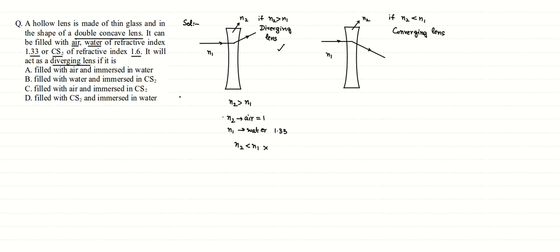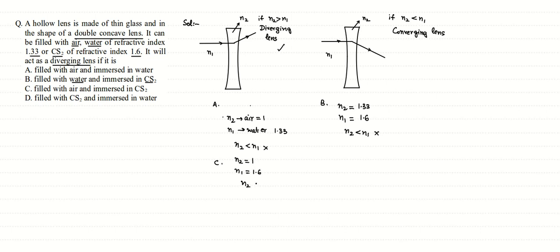In the second case, it is filled with water and immersed in CS2. So n2 (inside) is water = 1.33 and n1 (outside) is CS2 = 1.6. Again n2 is less than n1 — not the condition we want. In the third case, it is filled with air and immersed in CS2, so n2 = 1 and n1 = 1.6. Again n2 is less than n1 — not the condition we are looking for.